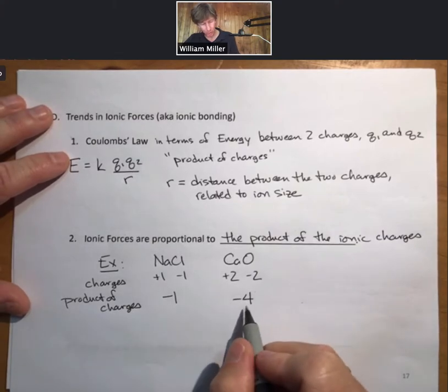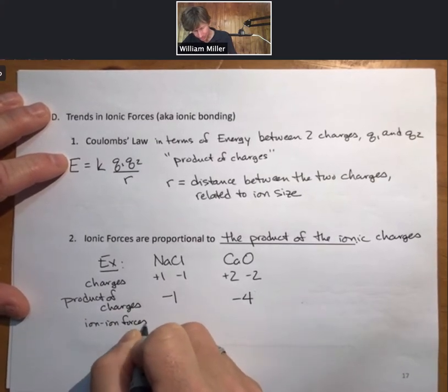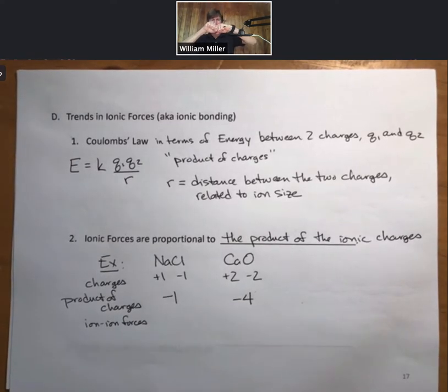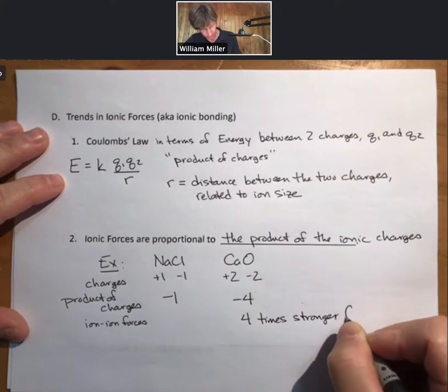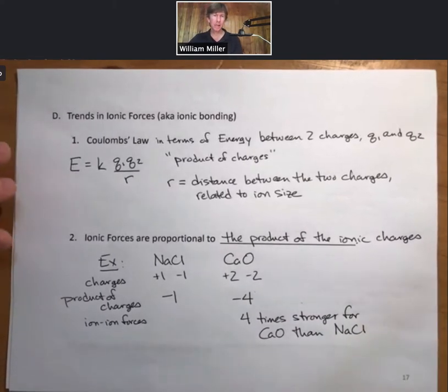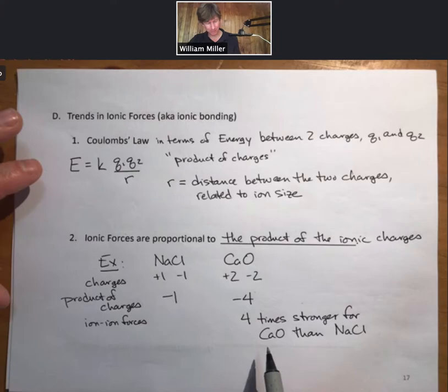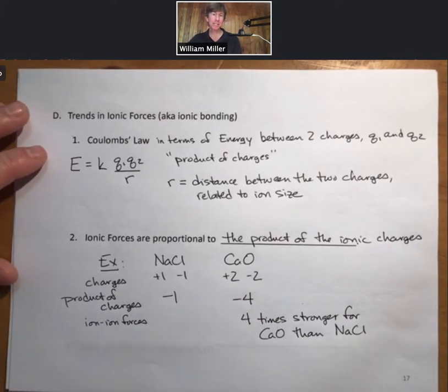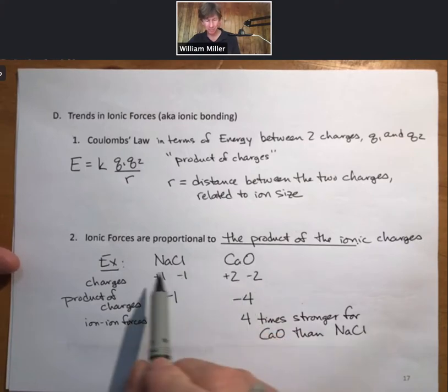So now we do the product of charges. Minus 1, that's 1 times minus 1. And minus 4. And so what we're going to say is then that ion-ion forces, those are also called ionic bonding, the strength of attraction between a positive and a negative ion. Ion-ion forces are four times stronger for calcium oxide than sodium chloride. And that's actually a very good rule of thumb.